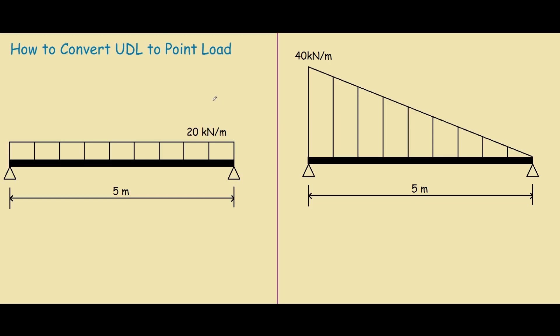How we achieve this is we multiply it by the length of the beam. So if we have 20 kN per meter times 5 meters, you can see the units of meters cancel out, and we're left with 100 kN.